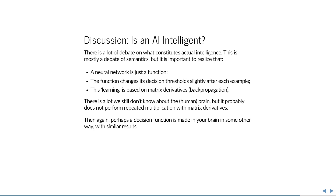What we call learning is really just updating weights — taking the derivative of the matrix of errors compared to the predicted input. We don't know for certain whether that's how the brain works, but we know it probably does not involve matrix multiplication, though perhaps there is some analogous decision function in the brain.